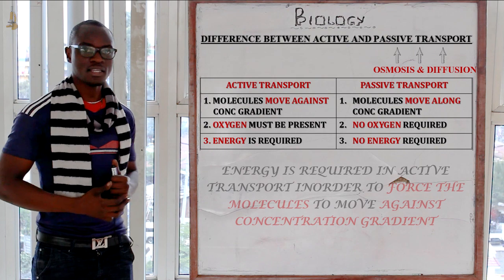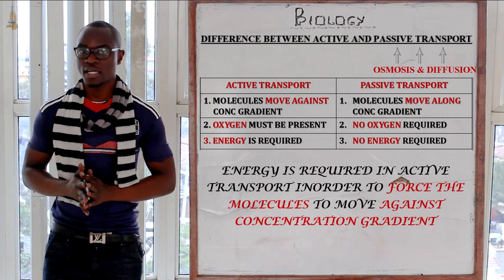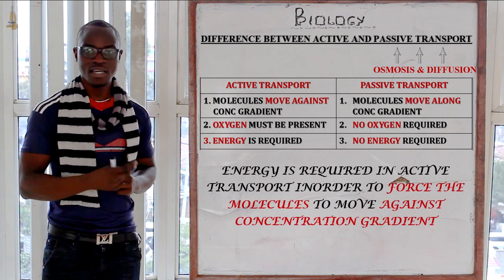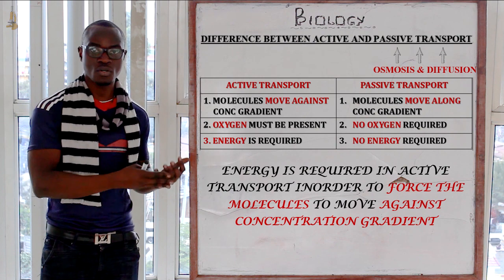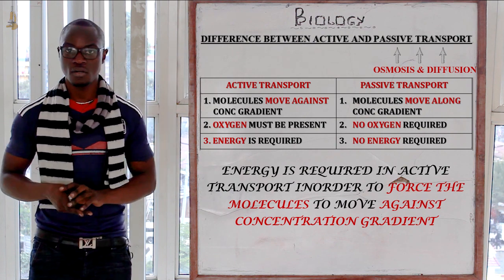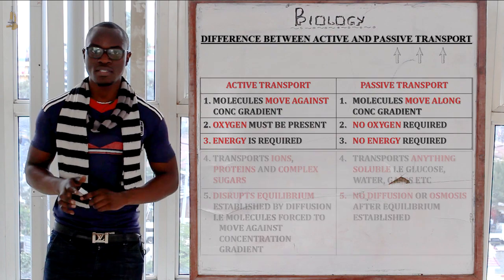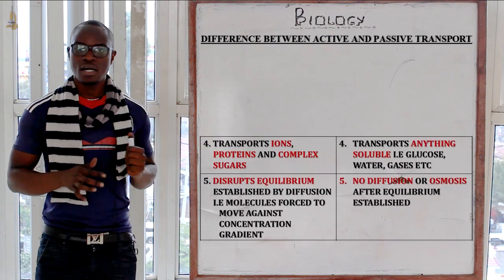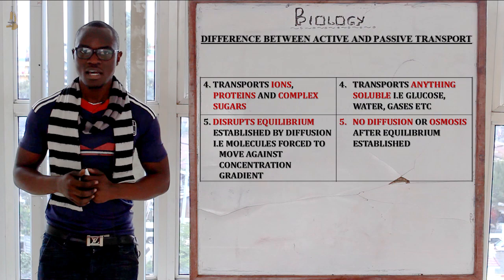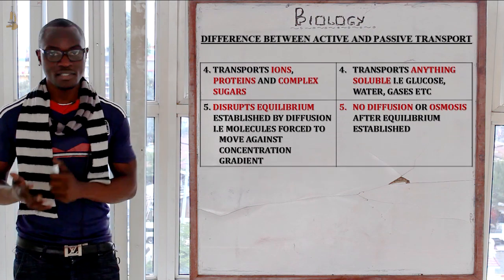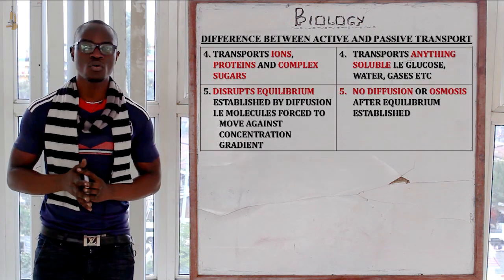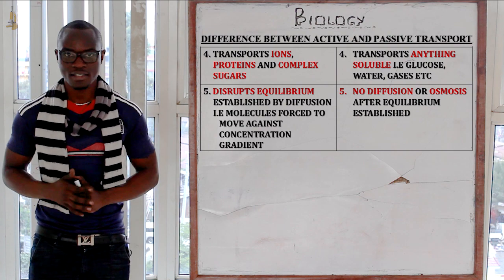Energy is required for active transport, while in passive transport — osmosis and diffusion — energy is not required. Another difference is that active transport transports ions, proteins and complex sugars, whereas in osmosis and diffusion we transport glucose, water, oxygen and gases.